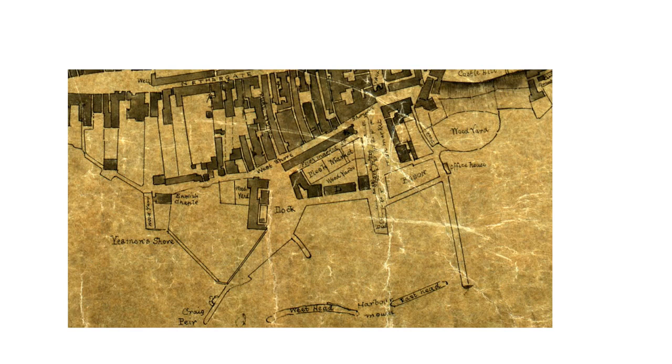Again, you also get an idea of how close the water came into the town. Look at Yeeman Shore — now a street name in Dundee, that is literally on the shore. Down there we've got Craig Pier, which is roughly where Discovery is and is probably in some ways the oldest continuously used part of Dundee's waterfront.